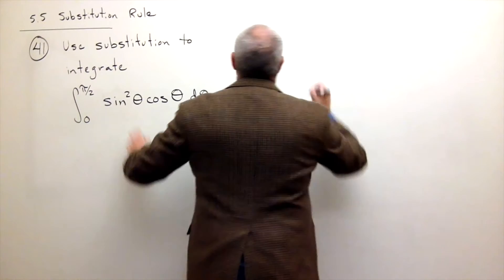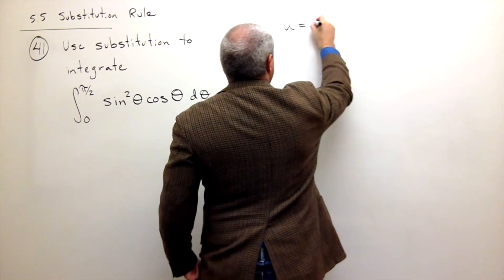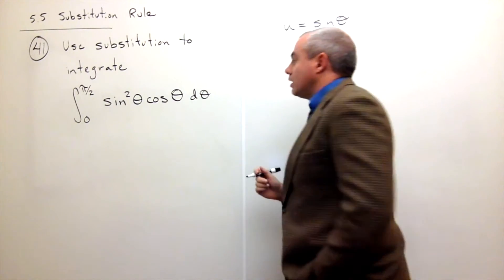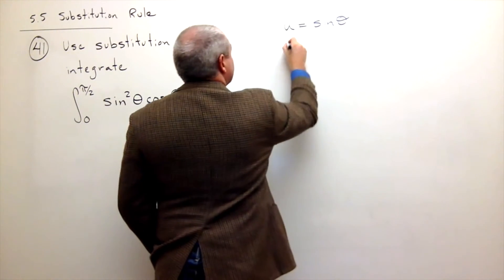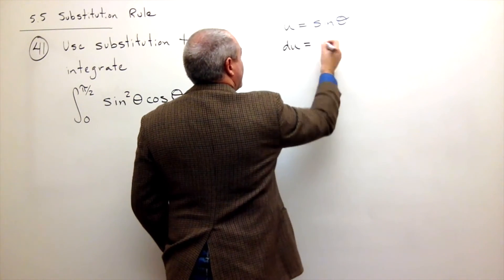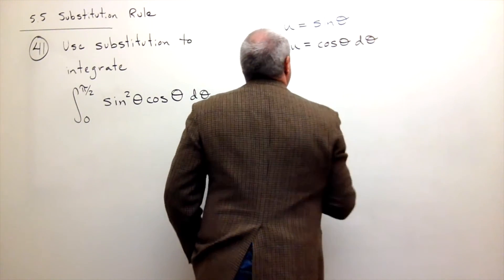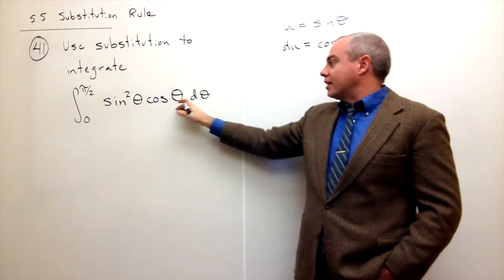Okay so I'm going to use u is equal to sine of theta. And we notice that if u is sine of theta then what is du? It would be cosine of theta d theta. Which is perfect because in this problem I have a cosine of theta d theta.